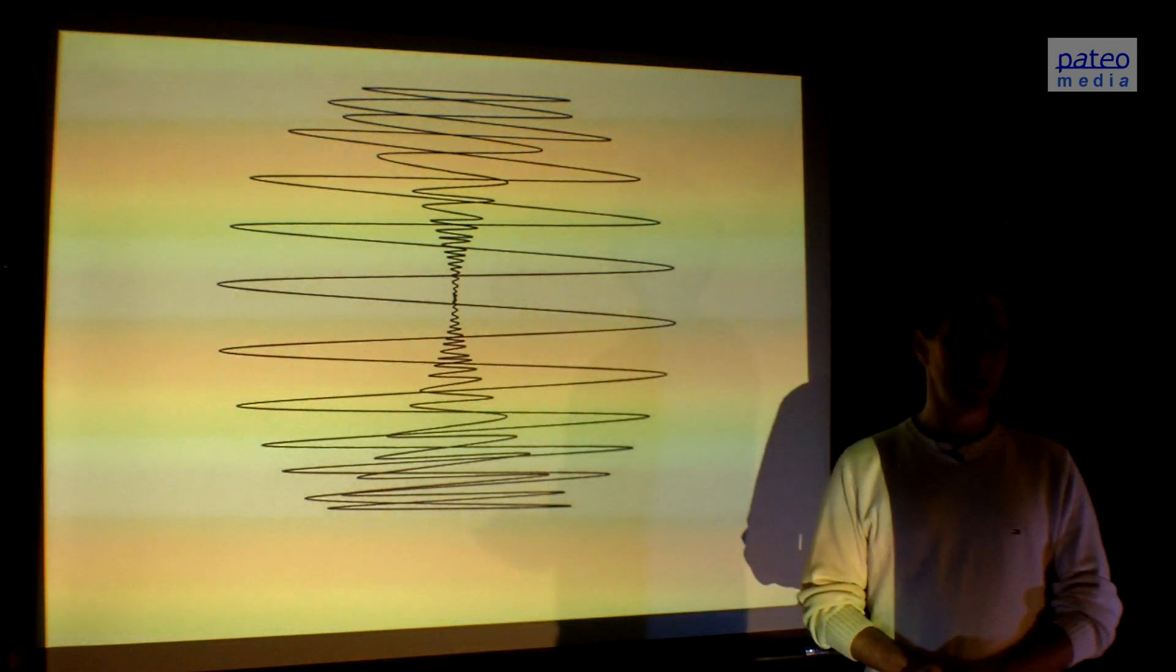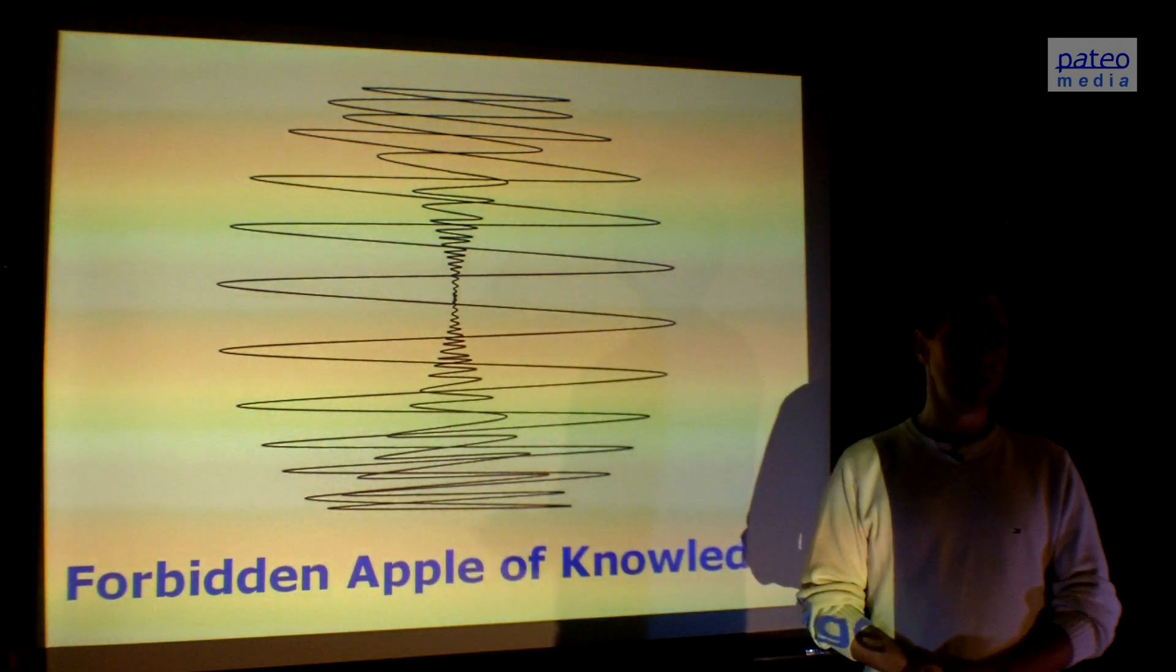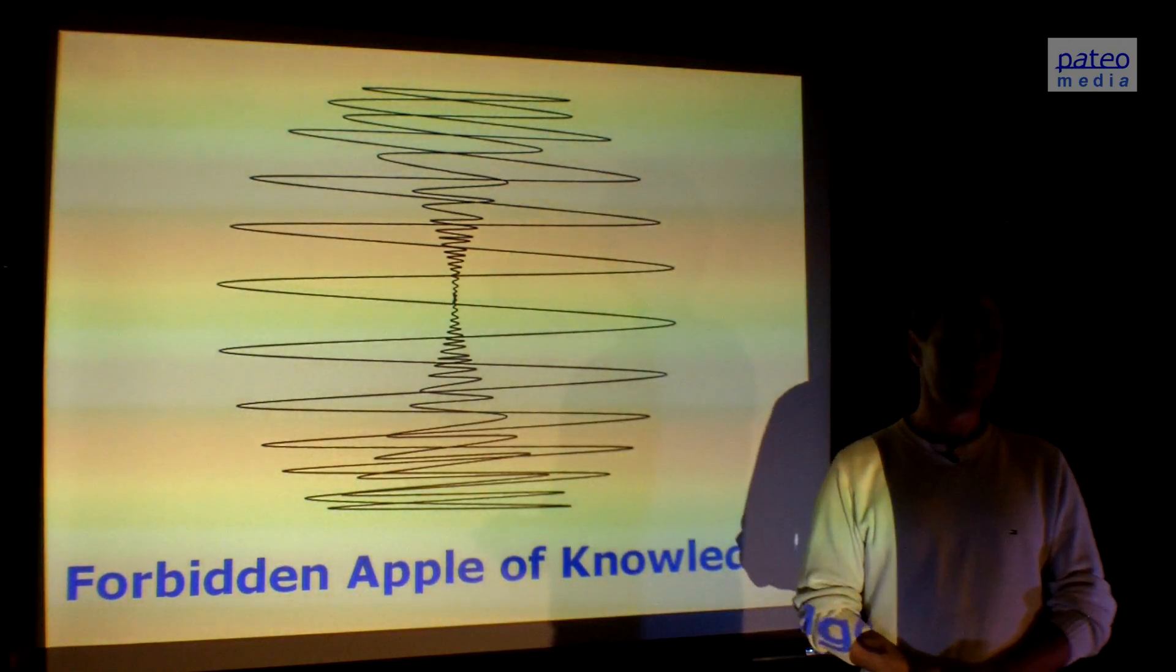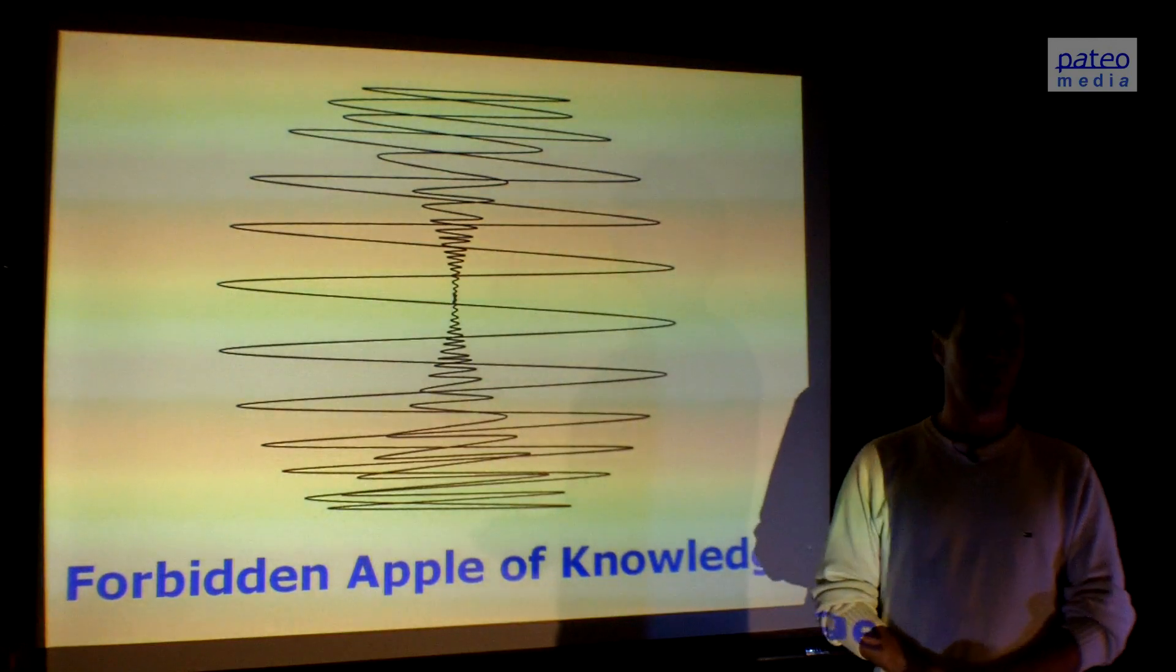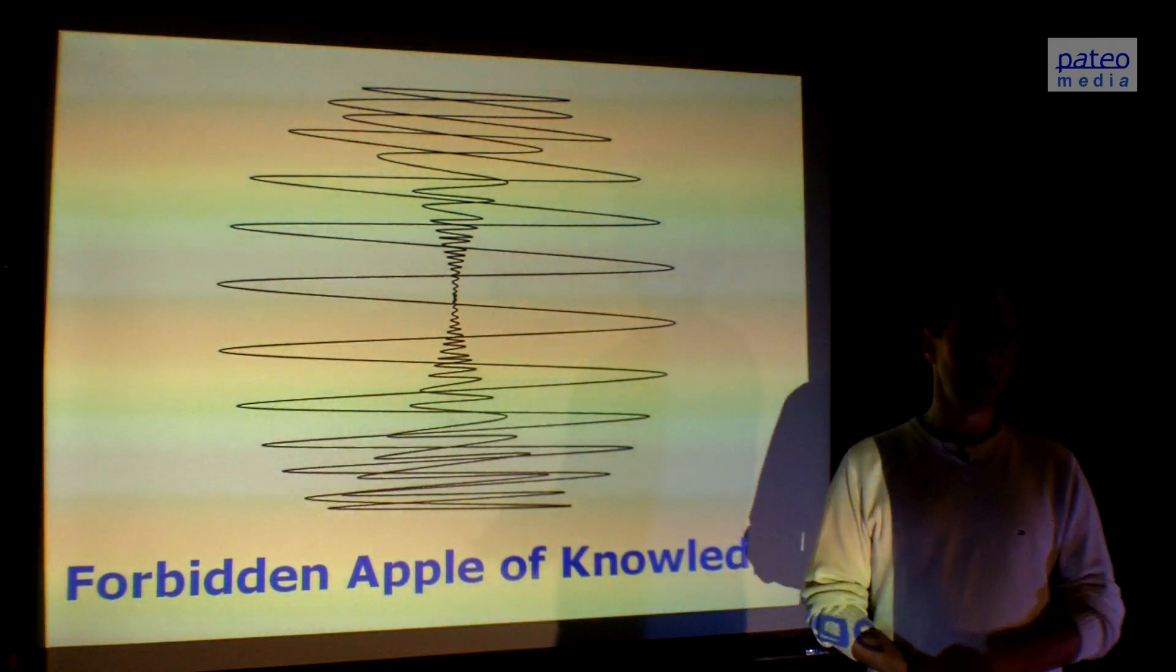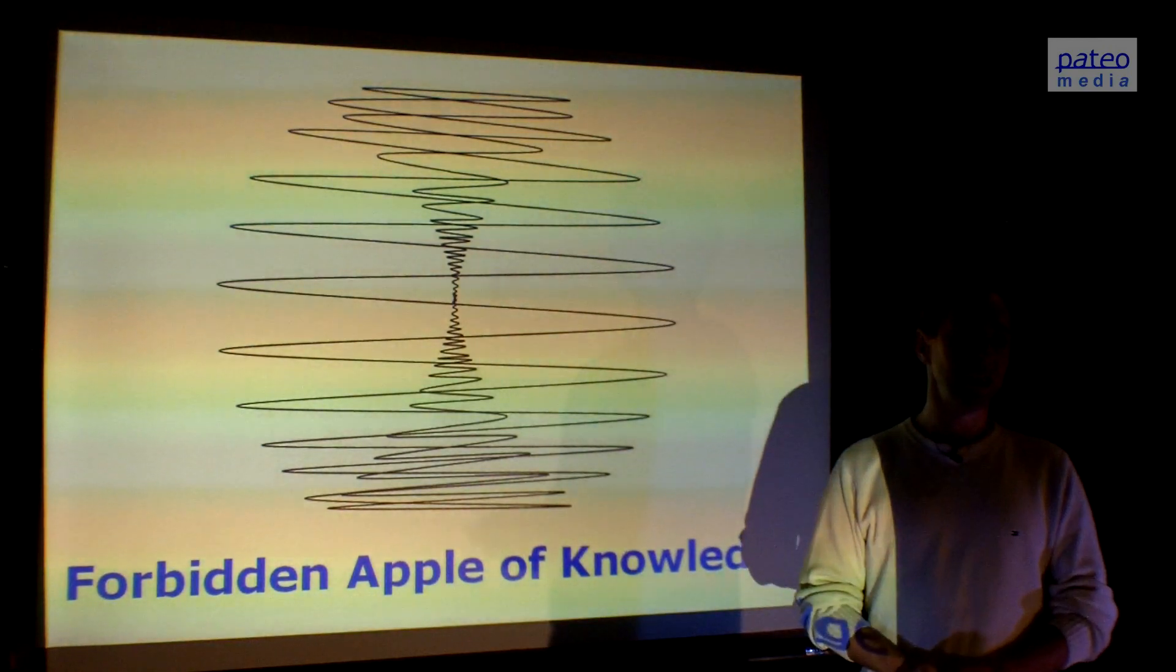Here we see the whole dynamics, and this is the forbidden apple of knowledge, as also mentioned in the Bible. The spiraling energy goes in, goes out, goes up and down, goes away from the center and towards the center. This is all present in this picture.